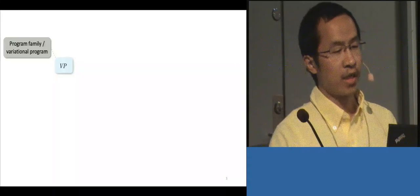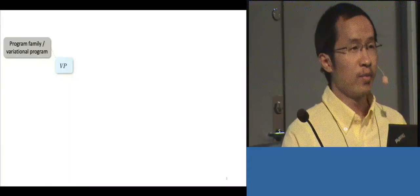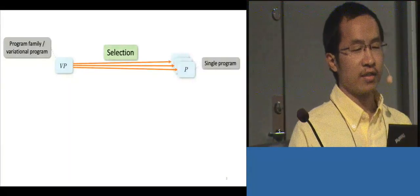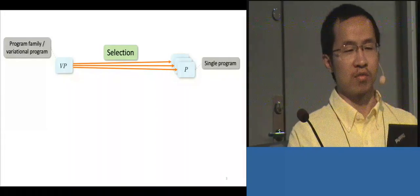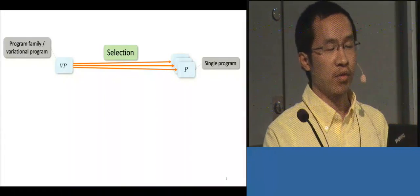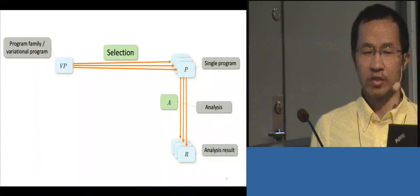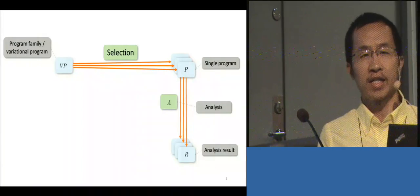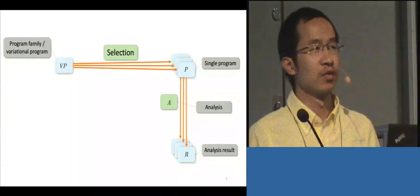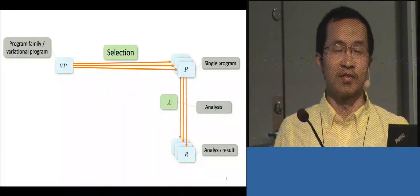Let's look at this abstract view. We begin with this version of a program, or what we call a program family. As we make different selections, we get different programs. And if we apply analysis, we get different results. We have already seen that this path is impossible to ensure some properties of the program.